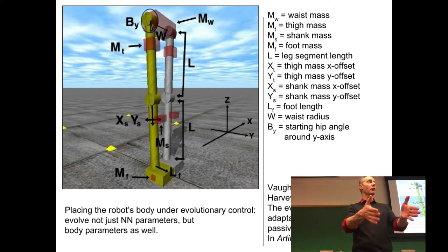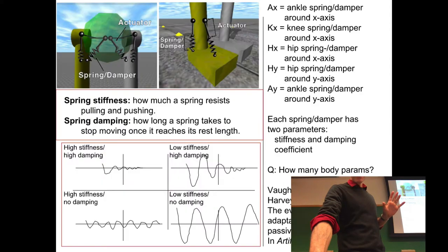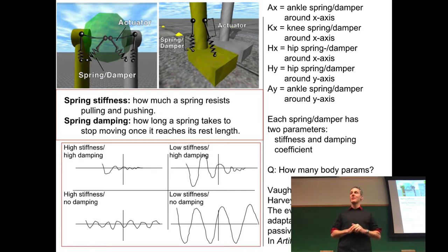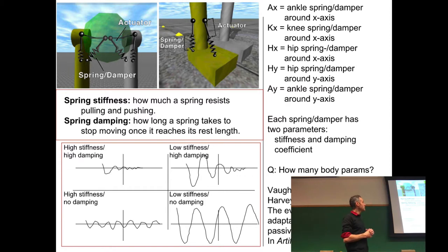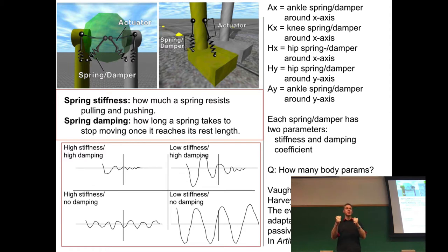Beyond the 12 morphological parameters controlling mass distribution, there are five additional parameters: springs placed on each leg, one per rotational degree of freedom. In PyroSim you've been creating rotational joints and adding motors. Here, the approach is a passive rotational joint with a spring and a motorized spring — a piston inside the coil that can extend or compress the spring.